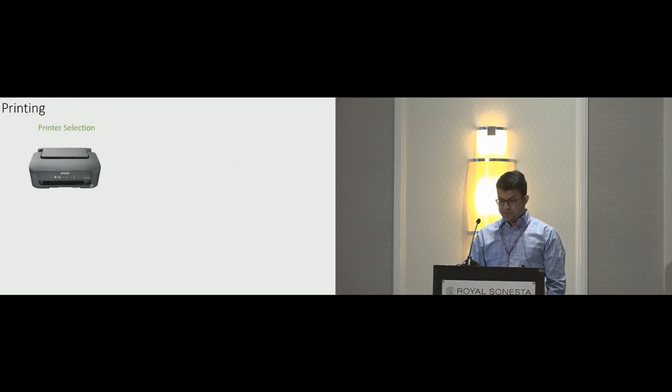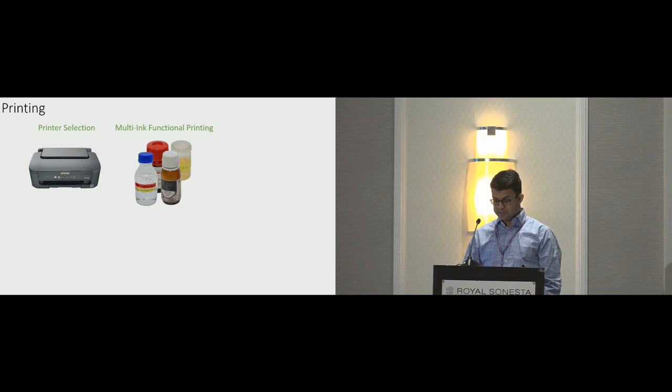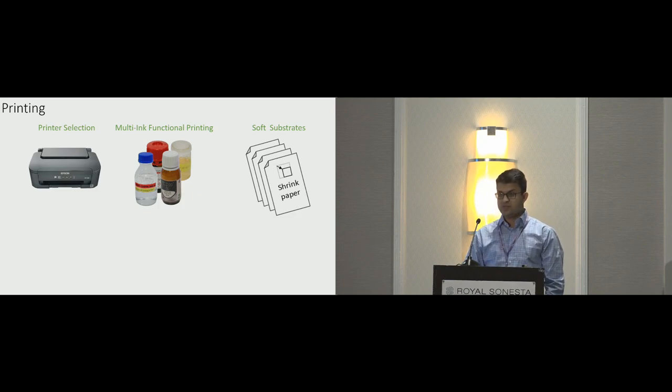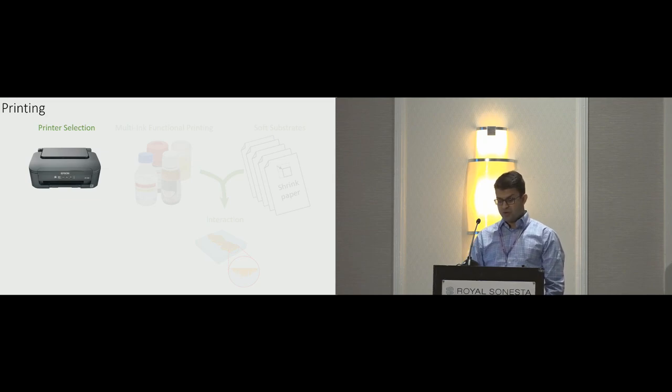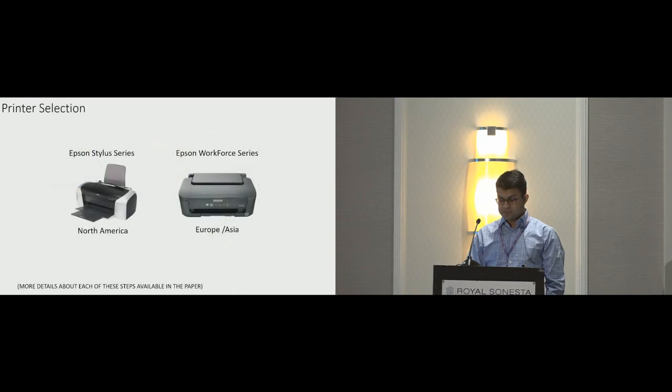In printing, we contribute in four categories. We provide useful guidelines for appropriate printer selection. We introduce the simultaneous usage of multiple inks in one printer. We extended the set of substrate materials from flexible-only films to soft and stretchable materials. At last, we present DIY techniques to enhance the compatibility between these inks and substrates. I won't go into the details of the printer selection. However, I do want to highlight that we did an extensive exploration of printers and identified the requirements. This allowed us to recommend two suitable models out of a large variety of commodity inkjet printers available. Details are in the paper.